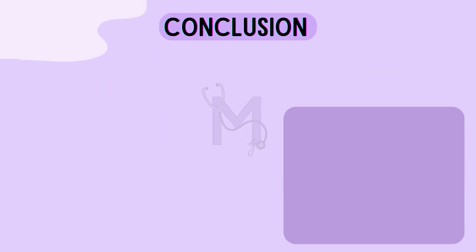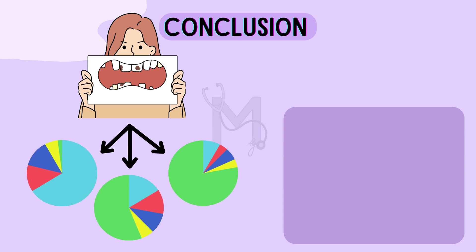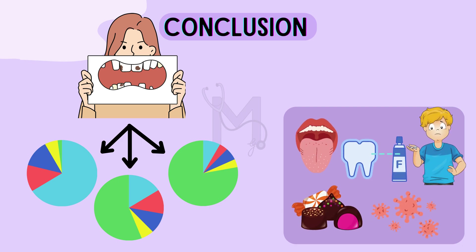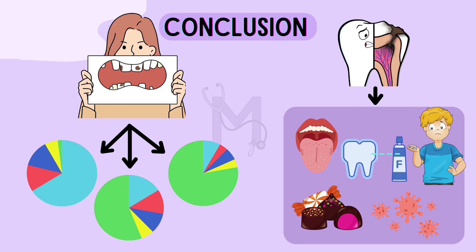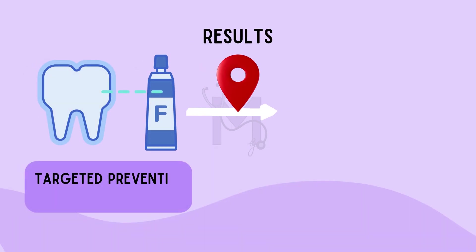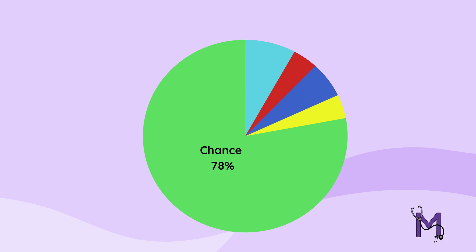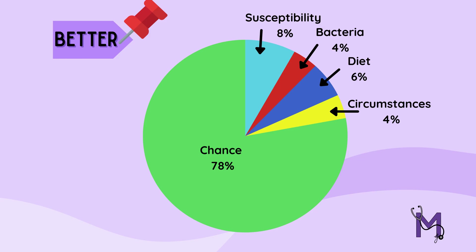In conclusion, the cariogram shows if the patient overall is at a high, intermediate, or low risk for caries. It also shows for every individual examined which etiological factors are considered responsible for the caries risk. The results also indicate where targeted preventive actions are needed to improve the situation with the best possible effect. Always remember that the bigger the green sector, the better. For the other four sectors, the smaller the sector, the better from a dental point of view.